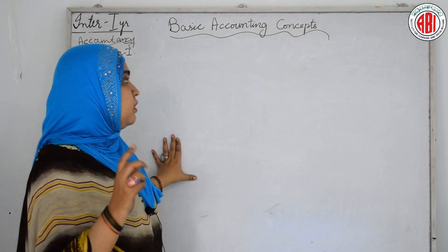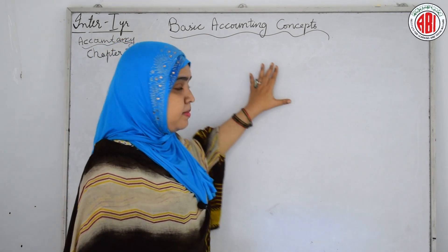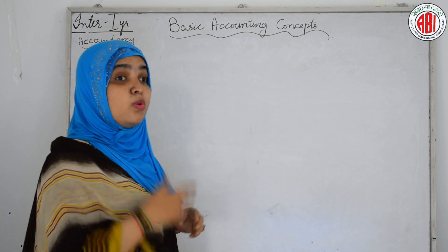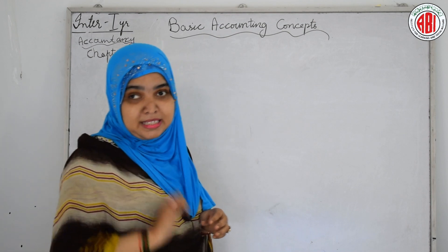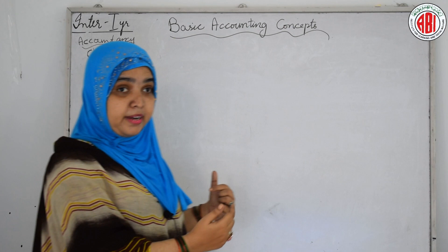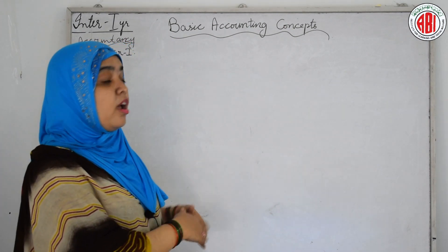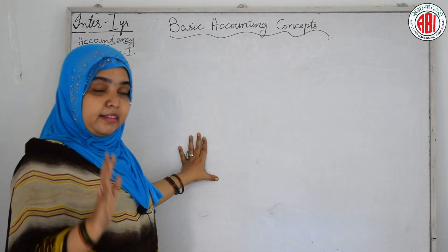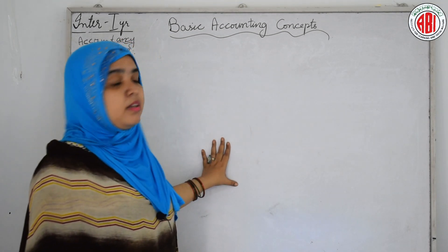After goodwill, the next important basic accounting concept is debtor. Who is a debtor? A debtor is a person who owes money to the businessman — he has borrowed money from the businessman and is not in a position to pay off the debts immediately. He may take two or three years to pay off these debts. Debtors come under the category of assets.